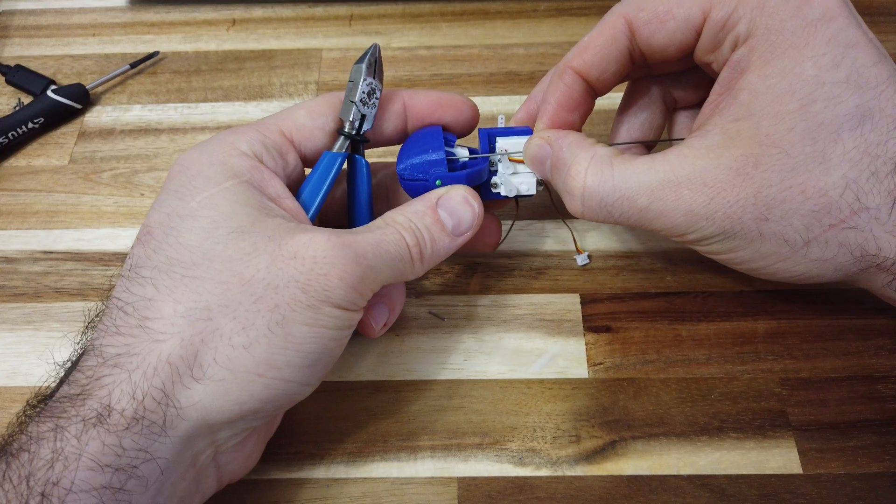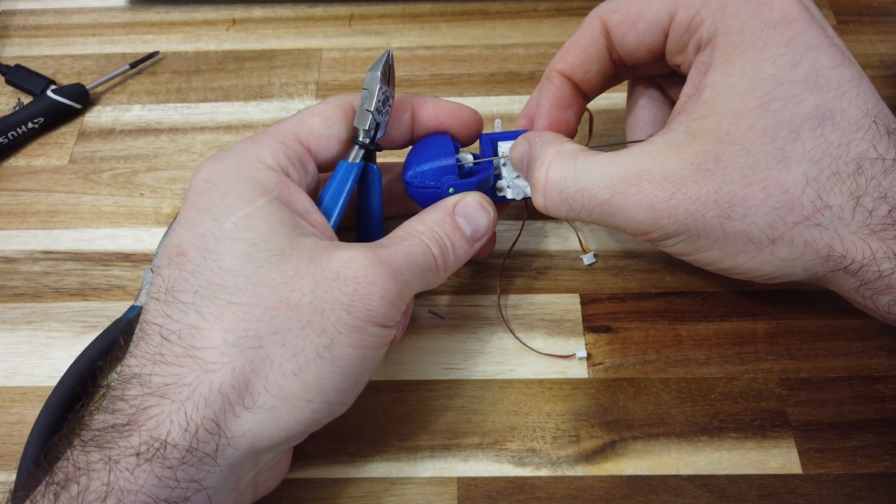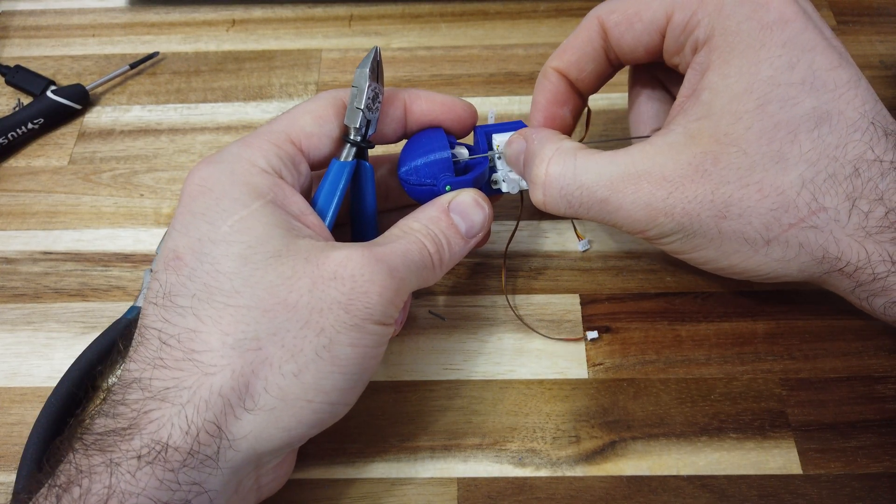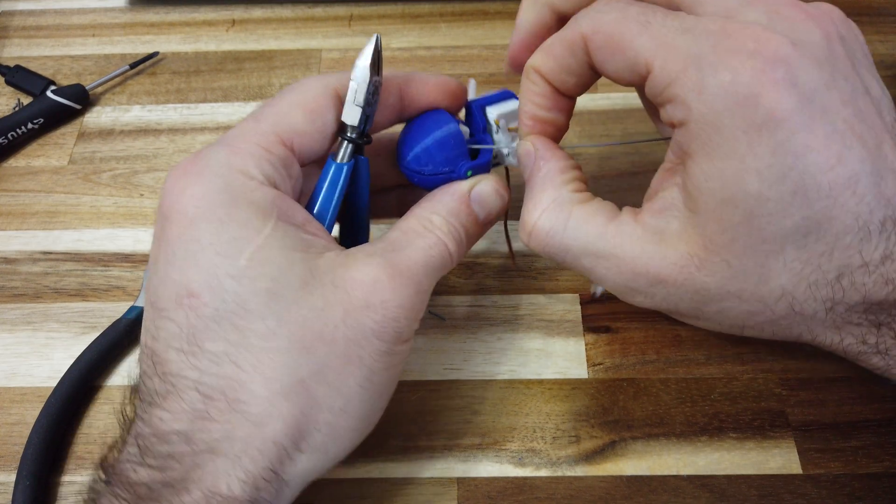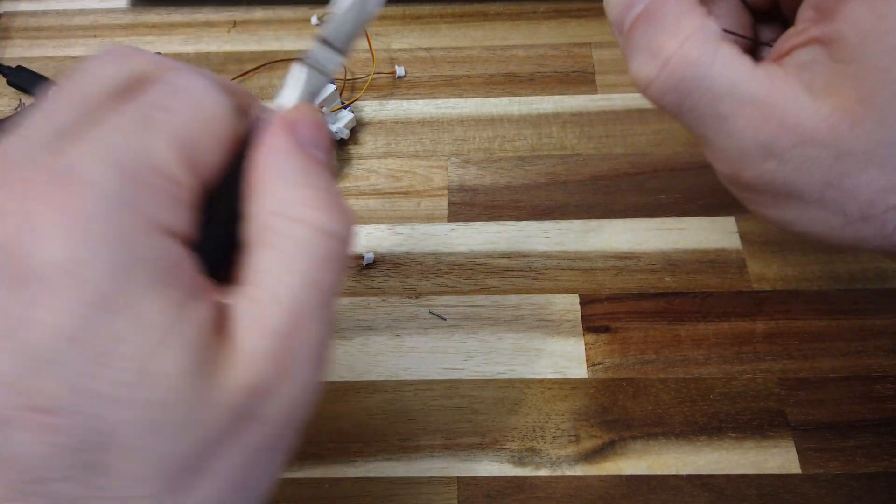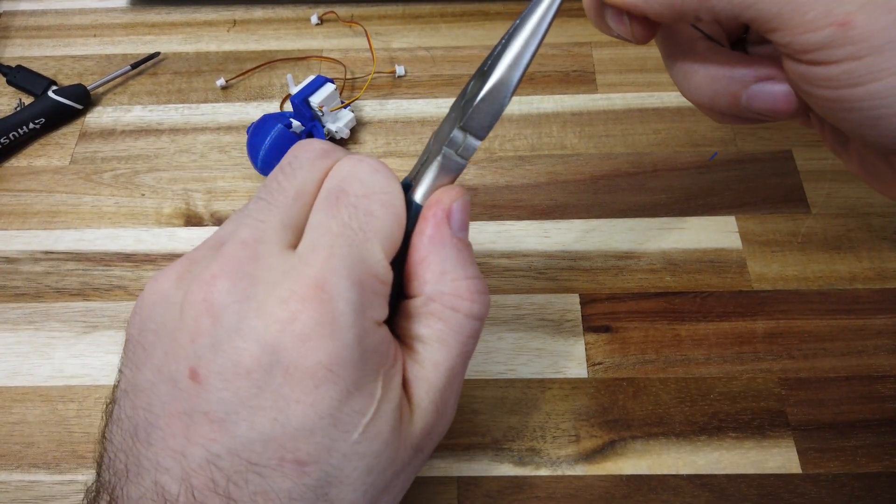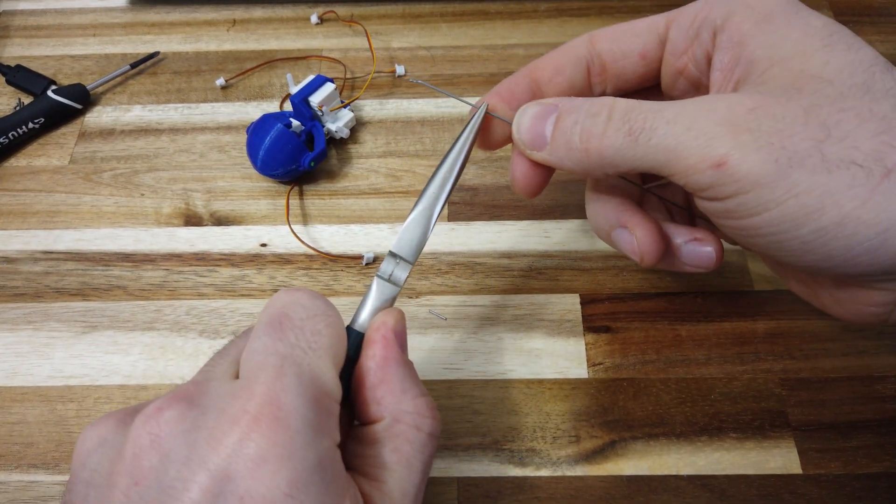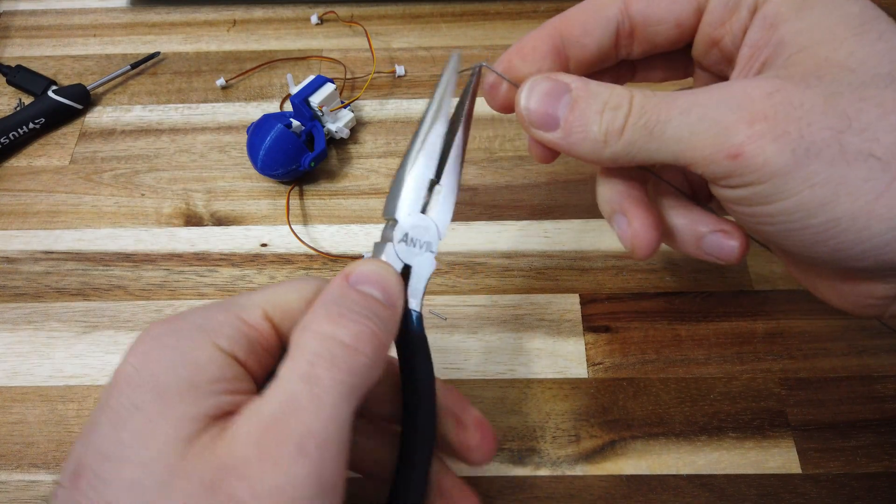Right about there. And you want to mark this with a fingernail. Just say, alright, we want that to be there. Pull this guy back out. And right at the fingernail, bend it.